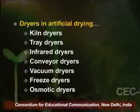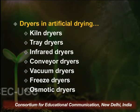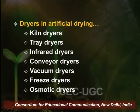Different types of dryers are utilized in artificial drying. These can be kiln dryers, tray dryers, infrared dryers, conveyor dryers, vacuum dryers, freeze dryers, and osmotic dryers.